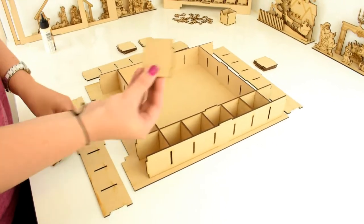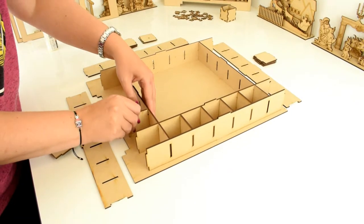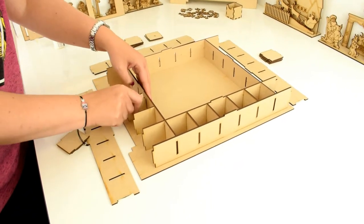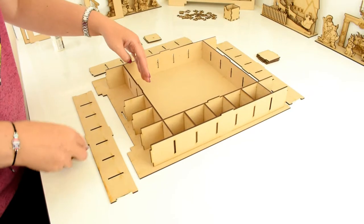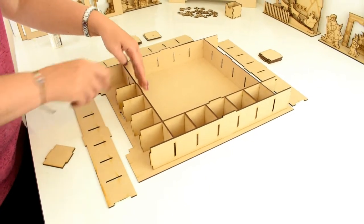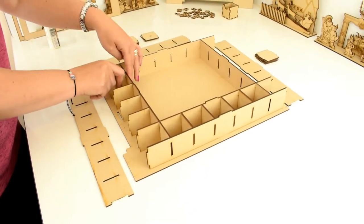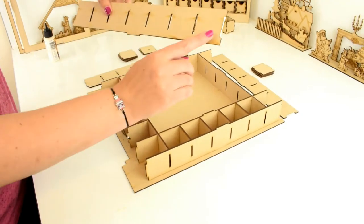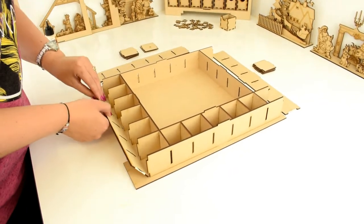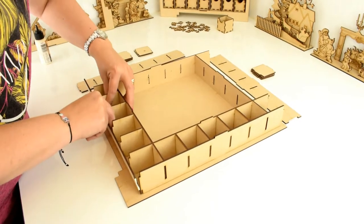Then take all your plain square pieces and slot these along the bottom. Take your bottom piece with the pieces cut out of the sides and slot this on the bottom.